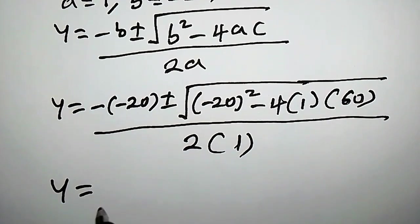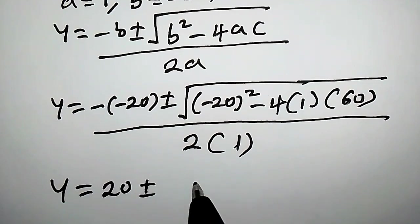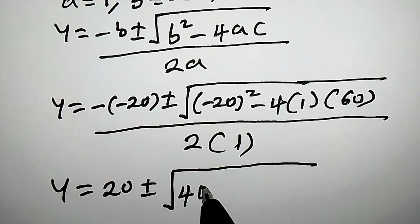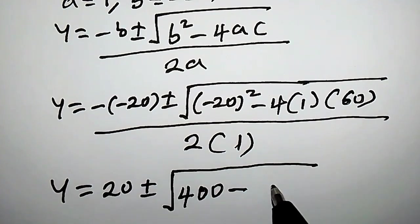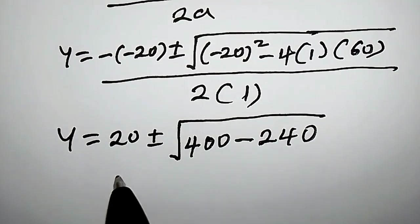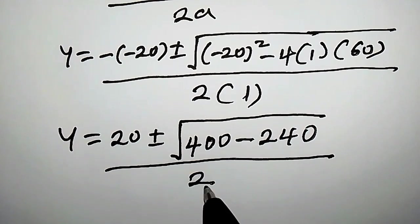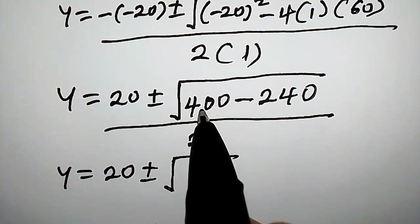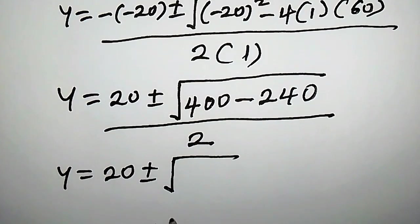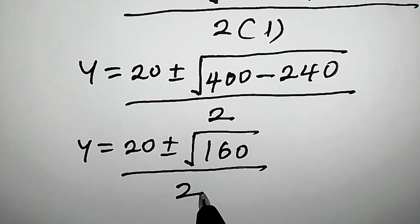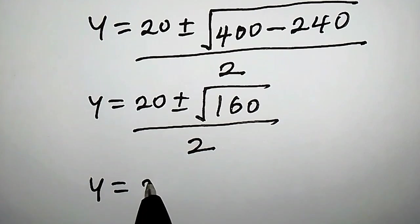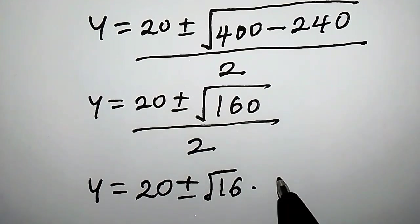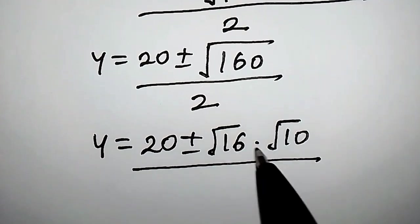So y equals negative times negative 20, that is 20, plus or minus the square root of (negative 20) squared — which is 400 — minus 4 times 1 times 60, that is 240, divided by 2 times 1, which is 2. The square root of 160 can be written as the square root of 16 times the square root of 10, divided by 2.